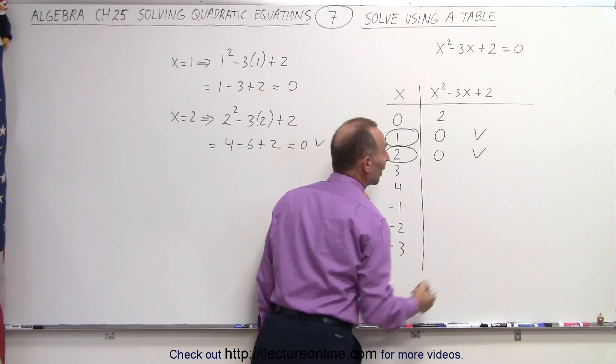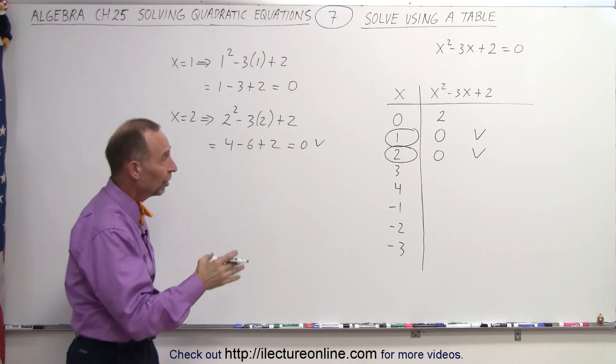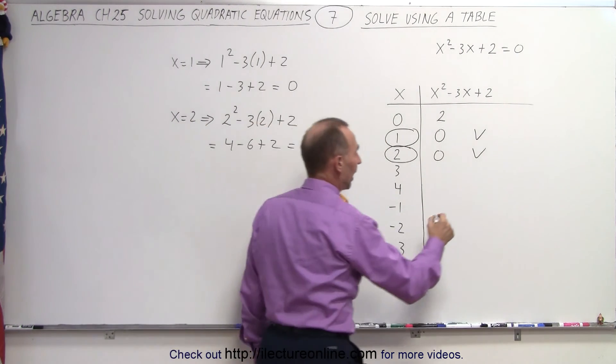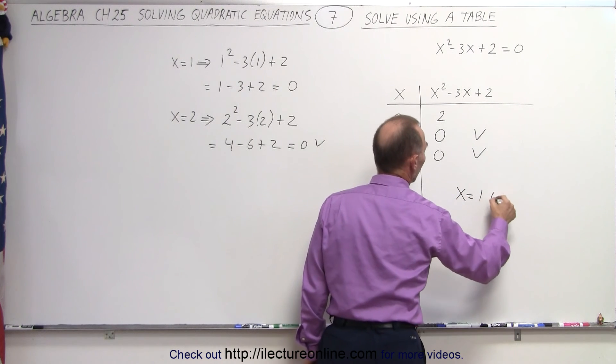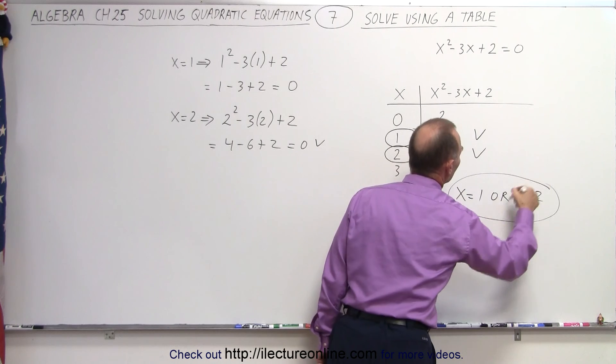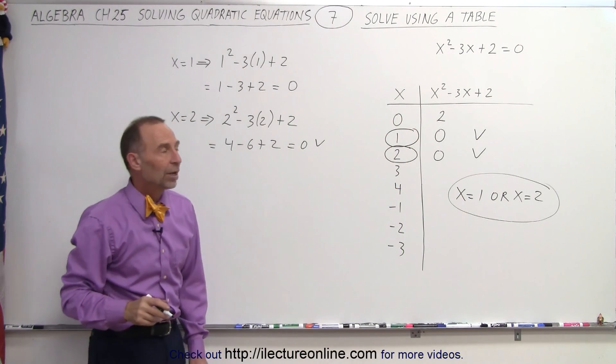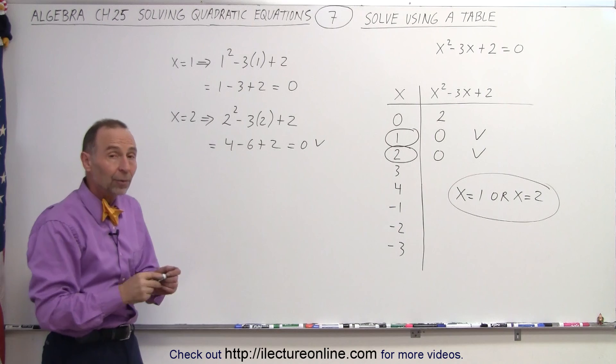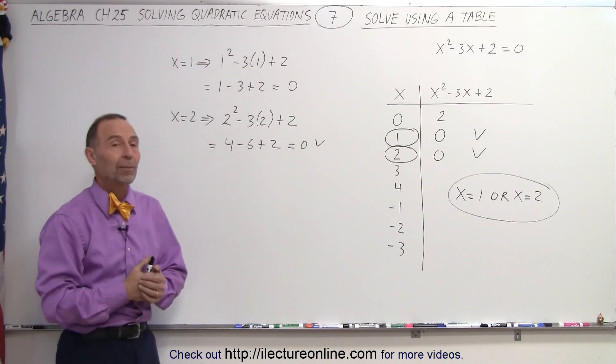At this point, we've found two solutions and don't need to go further. The solutions are x = 1 or x = 2, both satisfying our original quadratic equation. That's how it's done using a table of values.